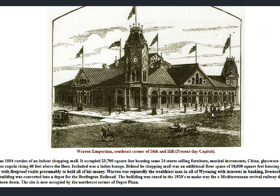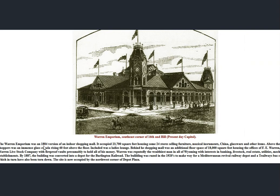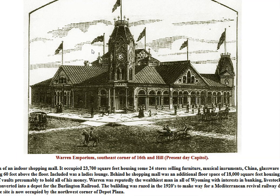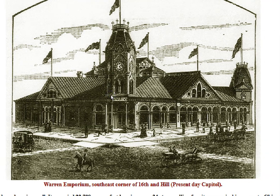Final photo — we're going to finish here with the Warren Emporium. We did see hints of this in previous photographs and postcards. Really amazing structure. 1884 — an early version of an indoor shopping mall — occupied 23,000 square feet, housing 24 stores, in 1884. Remember the population of Cheyenne in 1884: about 4,000 people. Ridiculous. The building was razed in the 1920s to make way for a railway depot. All we have is a drawing now. Anyway, that would be Cheyenne, Wyoming. I hope you enjoyed this video. Thanks for watching.